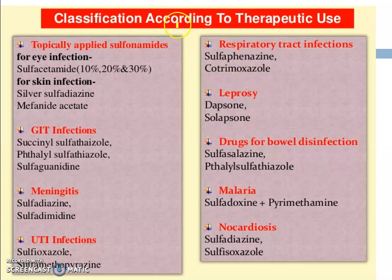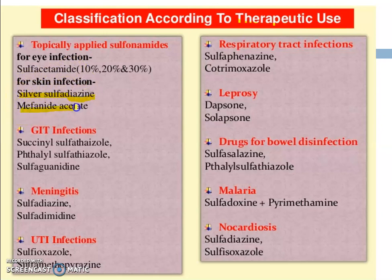Classification according to therapeutic uses: topically applied sulfonamides include sulfacetamide for eye infections, sulfacetamide for skin infections, silver sulfadiazine and mefenide acetate. Silver sulfadiazine is also used for burns. GIT infections: succinyl sulfathiazole, phthalyl sulfathiazole, and sulfaguanidine.